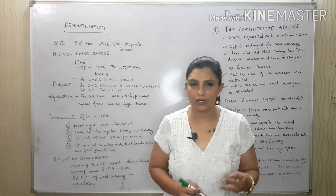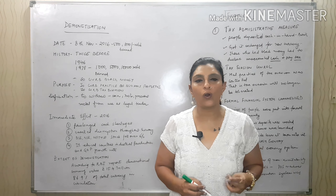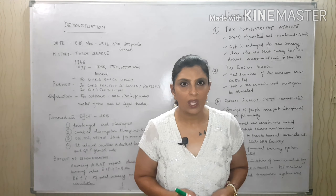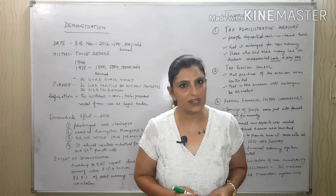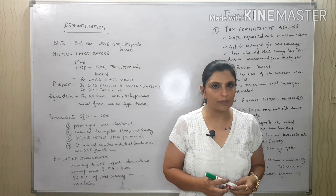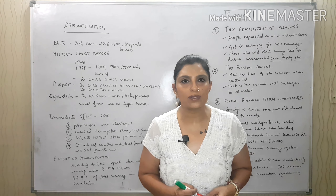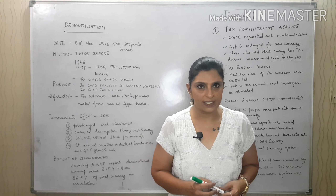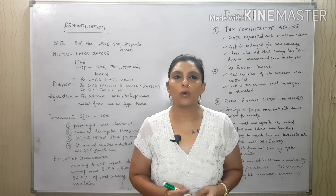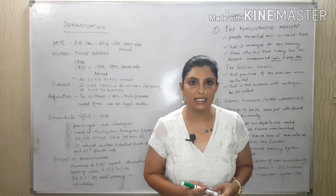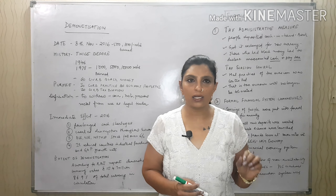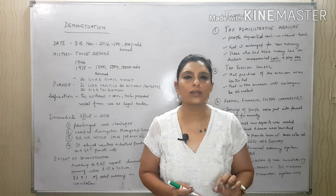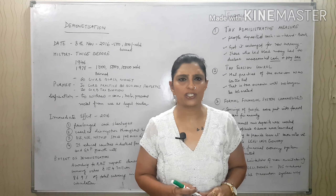In India, demonetization has happened three times: once in 1946, again in 1978, and third time in 2016. When it happened in 1946 and 1978, the intention was to curb black money. In 2016 again, the intention was to curb black money along with many other reasons. Demonetization means whenever a country withdraws the usage of a legal tender in circulation.